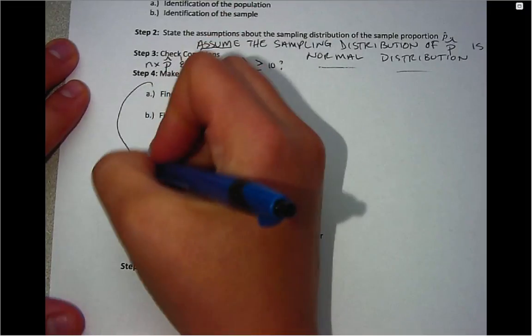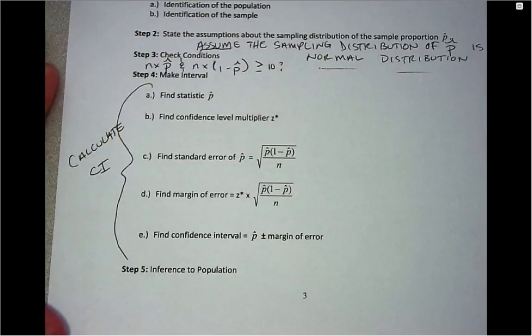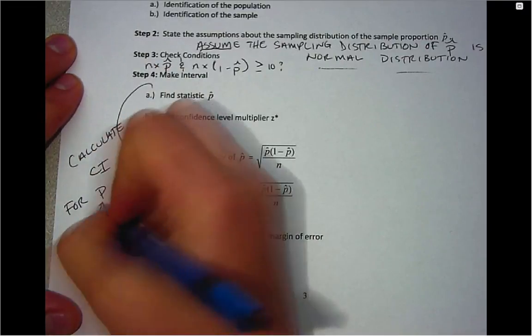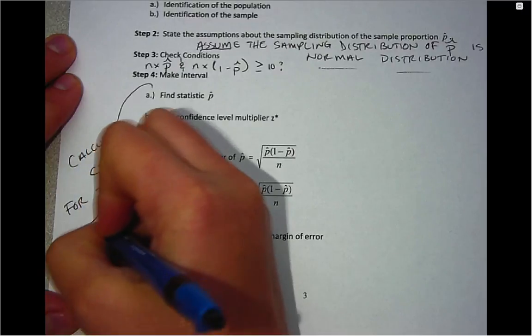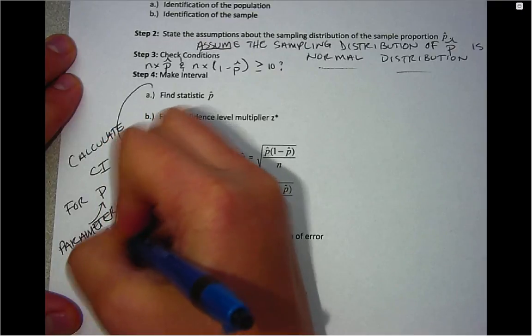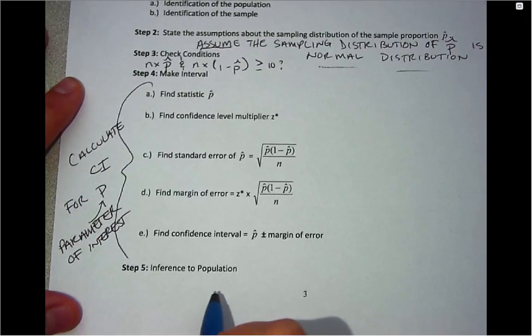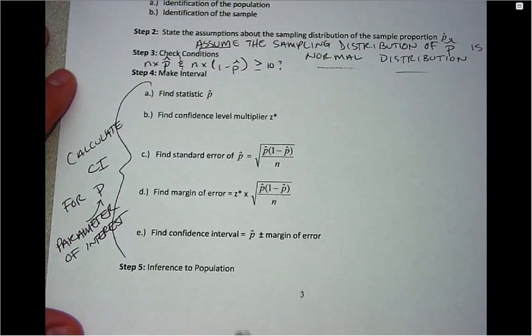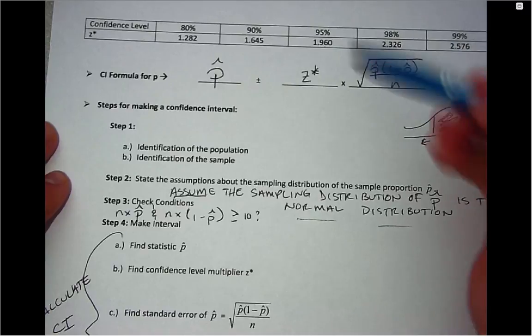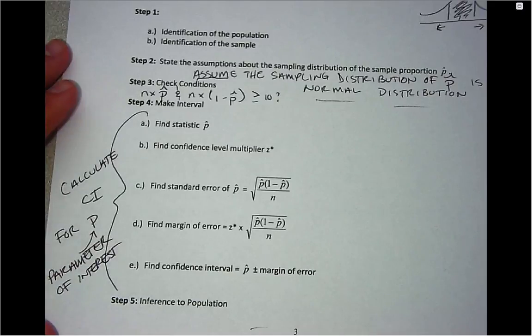Then in step 4, essentially the whole part of it is getting you to calculate the confidence interval. Remember, we're calculating a confidence interval right now for p, which is our parameter of interest. And then we will be using that confidence interval to make an inference on the population. When we make an inference on the population, we'll talk about how confident we are, which will connect to the confidence level multiplier. We'll also state our parameter of interest and then the interval itself.